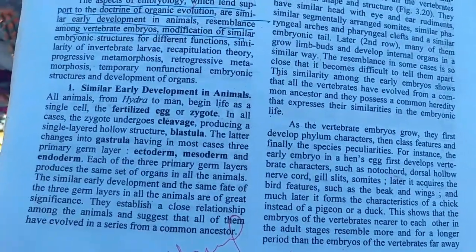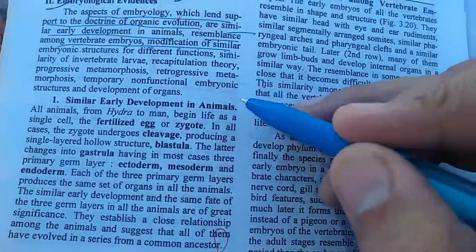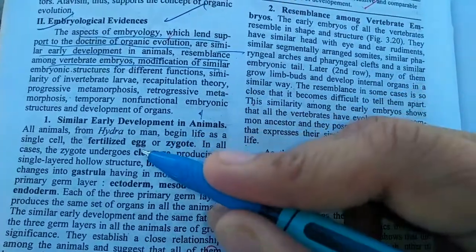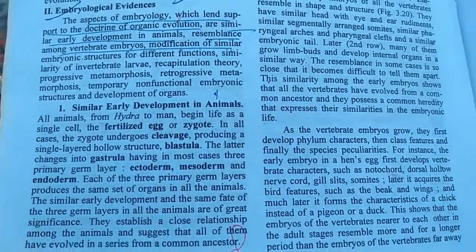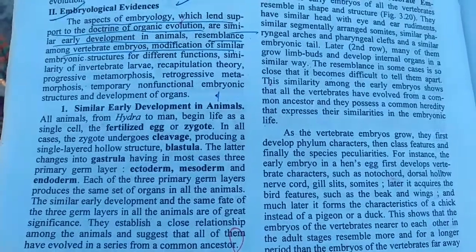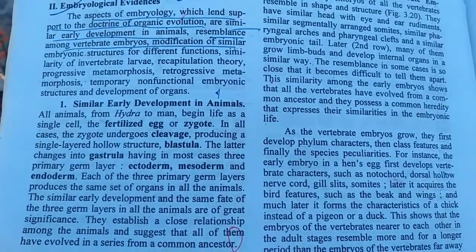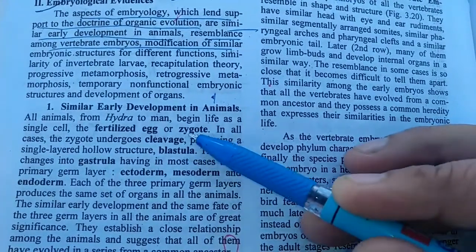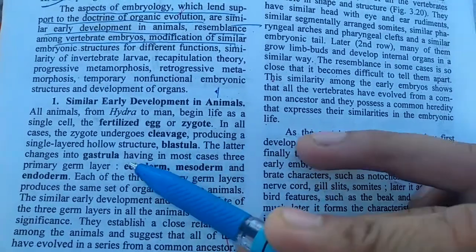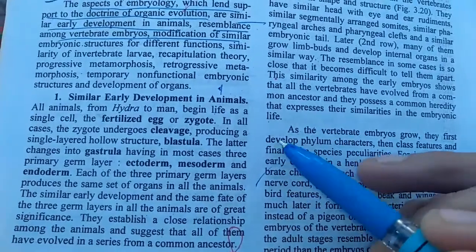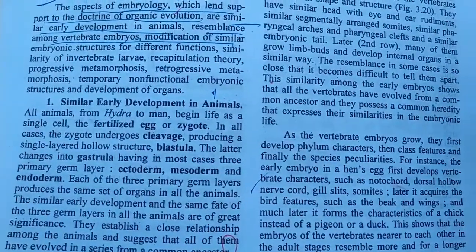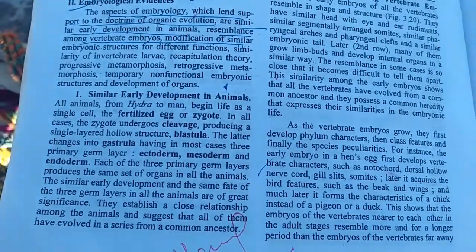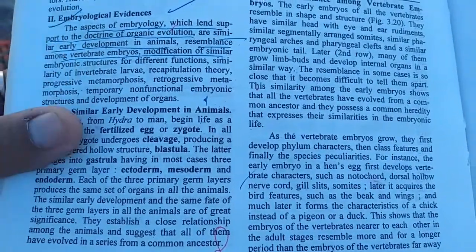Firstly, early development in animals. All animals are developed from a single cell, that is the zygote. It occurs by the fusion of the male and female gametes, sperm and ovum, forming the diploid structure that is the zygote. After that, it is cleaved into many cells through cleavage, forming the blastula, then gastrula, then three germ layers. The fate of these three germ layers is designated for different types of organs. So the first evidence is the similar early development in animals.